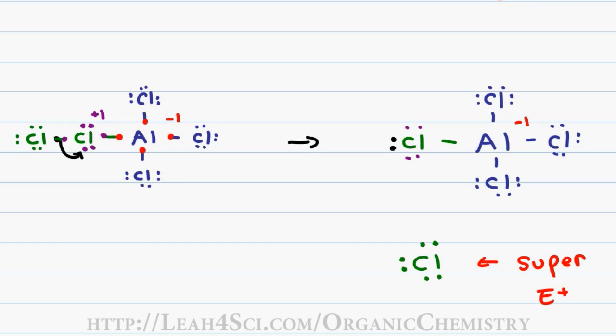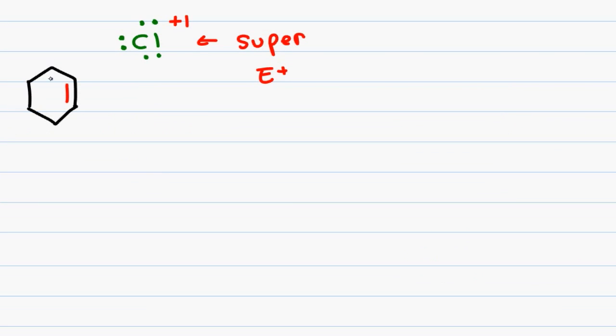Reason number 1, chlorine has an incomplete octet making it unstable. And reason number 2, look at the formal charge. Chlorine should have 7 electrons. It only has 6. 7 minus 6 is positive 1. Remember, halogens really dislike positive charge and so if you take a halogen and give it a positive charge and an incomplete octet, it's so unhappy, so unstable, benzene has no choice but to attack.